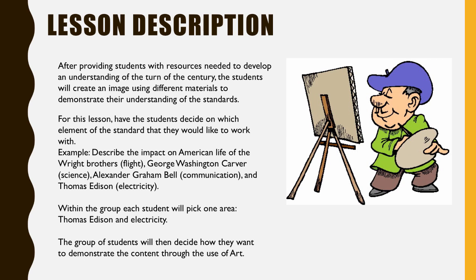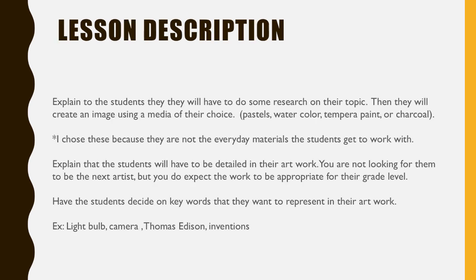So the lesson description. You're going to provide students with the resources they need to understand the turn of the century, and then let them know they're going to create an image using different types of materials to show what they know. For this lesson, you're going to have the students decide which element of the standard they want to work on. You've covered the content and then they're going to dive deeper into it. So for this example, we're going to use Thomas Edison. Then you want the students to decide how they want to work with art, and let them know they'll need to do some research on their topic because they're going to create an image using what they have learned.